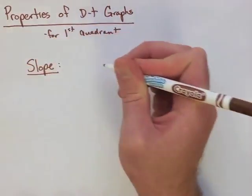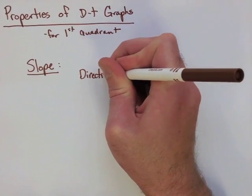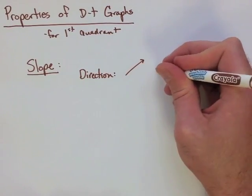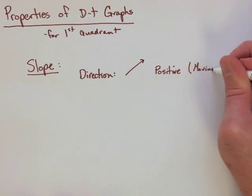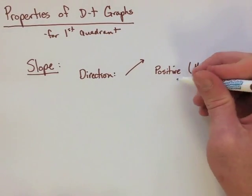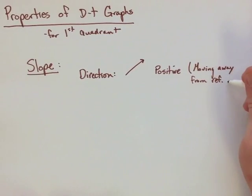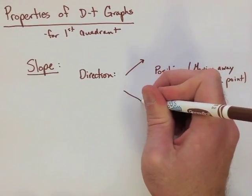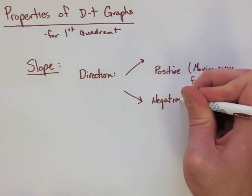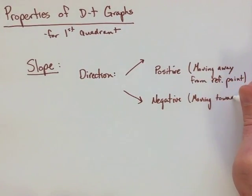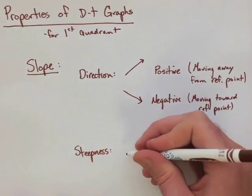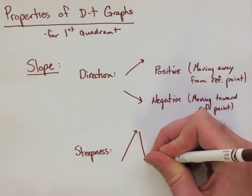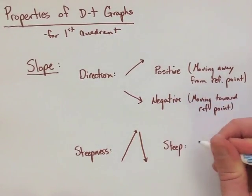For this, we're just going to look at the first quadrant because it does change slightly in other quadrants. Now if the direction of the slope is positive, this means that it's moving away from a reference point. Now this reference point can be associated as zero or as some point that we've established in the question. If it's negative, it means that it's moving towards the reference point. Now the steepness of the slope actually represents how quickly or how slowly the graph is moving.